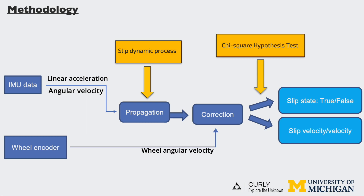This slide presents a full picture of the framework. We use IMU data in the propagation step and wheel encoder data in observation. After each round of the complement filter, we obtain slip velocity and hence can detect slip events using a chi-square hypothesis test.